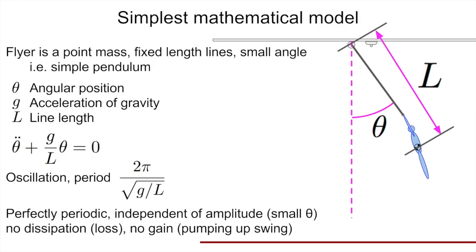I'm going to start with the simplest mathematical model for the flying trapeze system — basically regarding the flyer as a point mass with fixed-length lines oscillating through small angles, essentially a simple pendulum. If you write down the angular position of the flyer as theta, the angle away from the vertical, with acceleration of gravity g, and the length l — actually the distance from the swivel point to the center of mass of the flyer — you can write the system as a differential equation. The acceleration in the angle, the second time derivative of theta, is proportional to the angle through the constant g over l. The solutions are oscillations with a period of 2π over the square root of g over l.